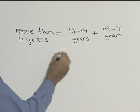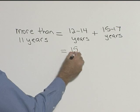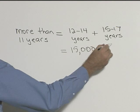So we said how many televisions lasted between 12 and 14 years? We said that was 15,000 televisions. And between 15 and 17 years, we said that was 5,000 televisions.